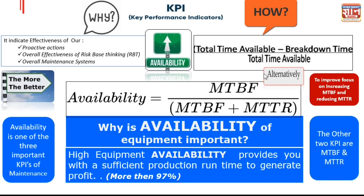Then availability. This indicates overall how good your maintenance is, how good your risk-based thinking is, and what proactive actions you take. The higher the percentage, the better your availability and the better your system is. How you calculate it: total available time minus breakdown time, divided by total available time. Generally in industry it should be more than 97% — 97, 98, 99 is what is expected. If it is below this, your overall maintenance is not good.